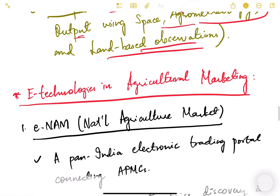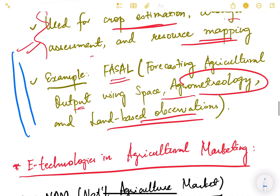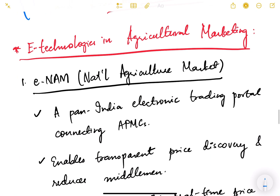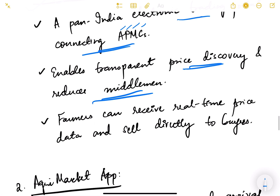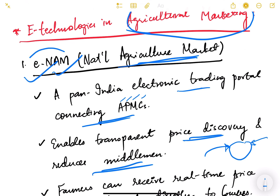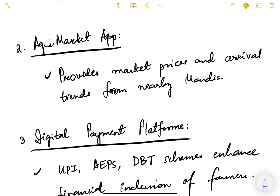Now let's look at e-technologies in agricultural marketing. The first is eNAM — National Agriculture Market — a pan-India electronic trading portal connecting various APMCs (Agricultural Produce Marketing Committees). It enables transparent price discovery and reduces middlemen, like an Amazon or Flipkart where farmers are sellers and buyers connect directly. Farmers can receive real-time price data and sell directly to buyers. The Agri Market app provides market prices and arrival trends from nearby mandis.